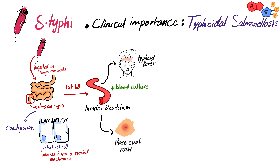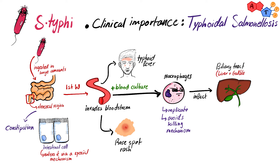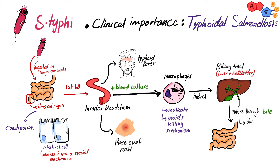It is important to know how S. typhi spreads through the bloodstream. This happens by invading macrophages, and once inside the macrophage, S. typhi escapes the killing mechanism and replicates. After that, S. typhi leaves the macrophages and infects the biliary tract — the liver and gallbladder — and from there, S. typhi enters the intestinal tract again through the bile. All of this happens during the third week of infection, at which time S. typhi causes diarrhea, and thus stool culture is usually positive at this point.